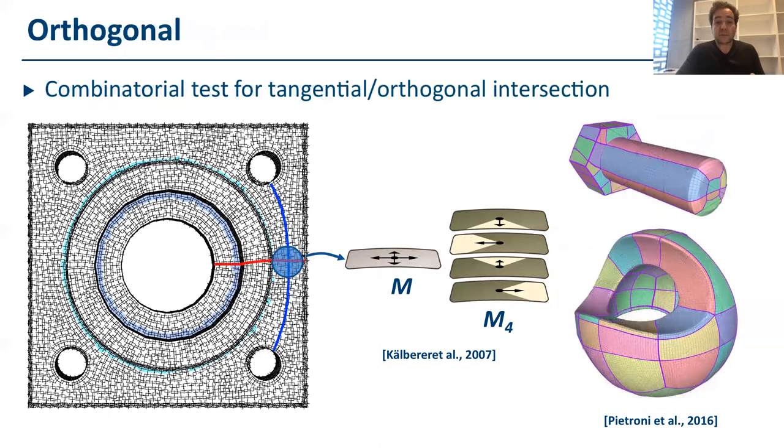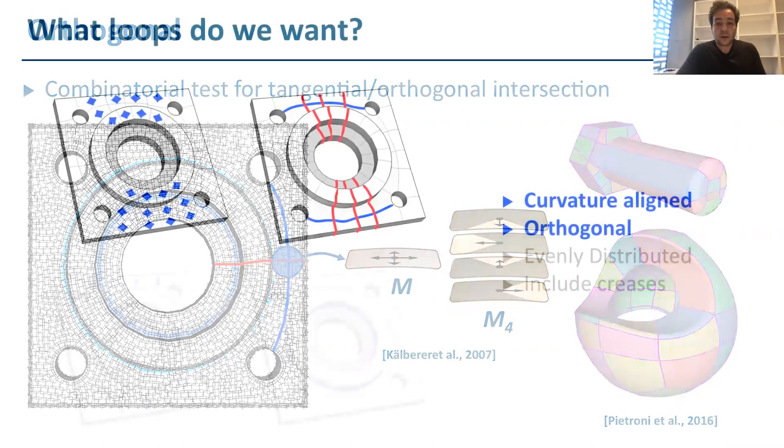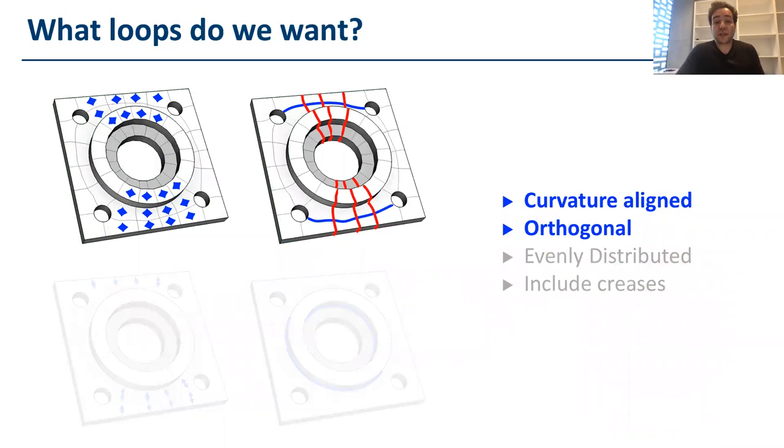At the same time, this method ensures the loops to mutually intersect orthogonally. So far we know how to create loops which follow curvature lines and also they are orthogonal. Let's see how we can match the other constraints.